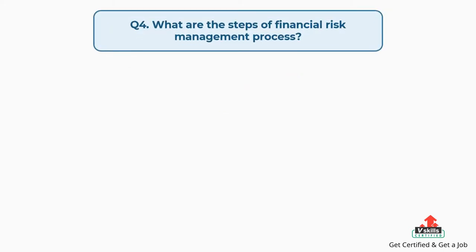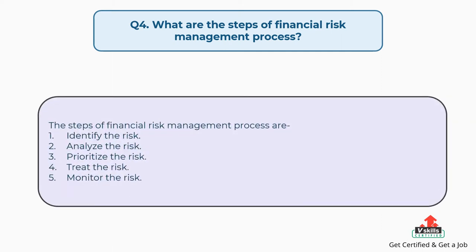Question number four: what are the steps of the financial risk management process? The steps are: firstly, identify the risk; secondly, analyze the risk; then, prioritize the risk; next, treat the risk; and lastly, monitor the risk.